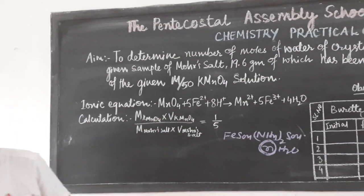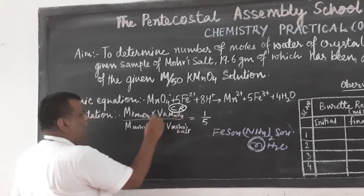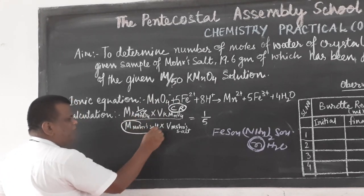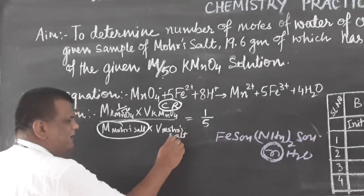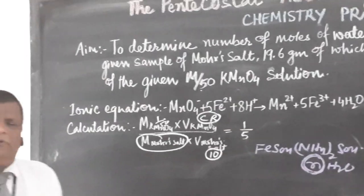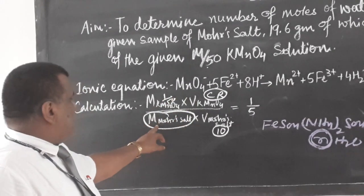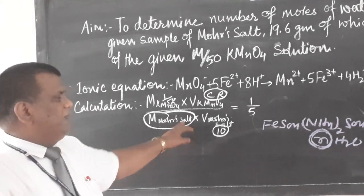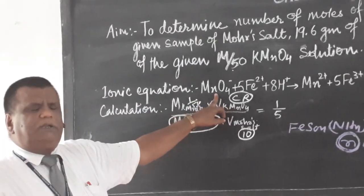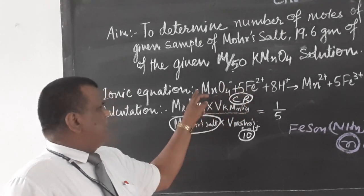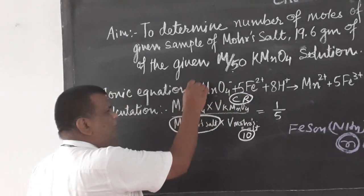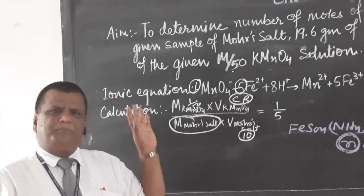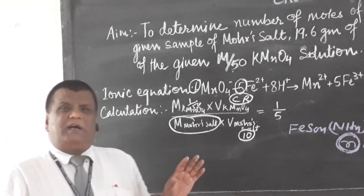So the concordant reading will be the volume of KMnO4. Molarity of KMnO4 is given as 1/50. You have to find the molarity of Mohr's salt; the volume of Mohr's salt taken by pipette is 10 ml. You must remember the reaction between KMnO4 and Mohr's salt: one mole of KMnO4 reacts with five moles of Mohr's salt. That's why we have the factor of one-fifth.